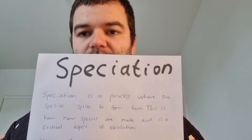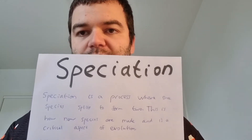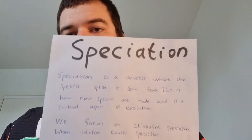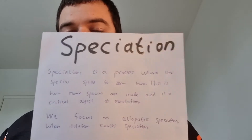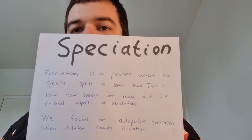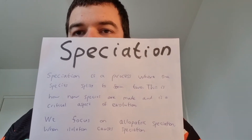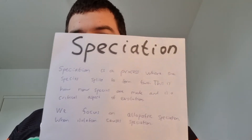That may be a definition you want to write down if you want to pause this. The main type of speciation that we focus on is called allopatric speciation. Allopatric speciation is when populations get separated by a geographical barrier, and that's what leads to speciation happening.